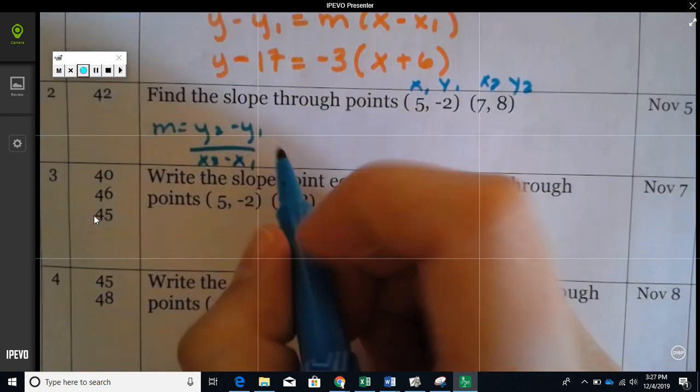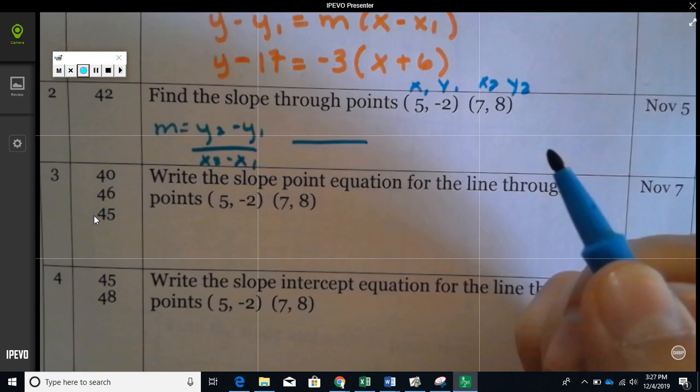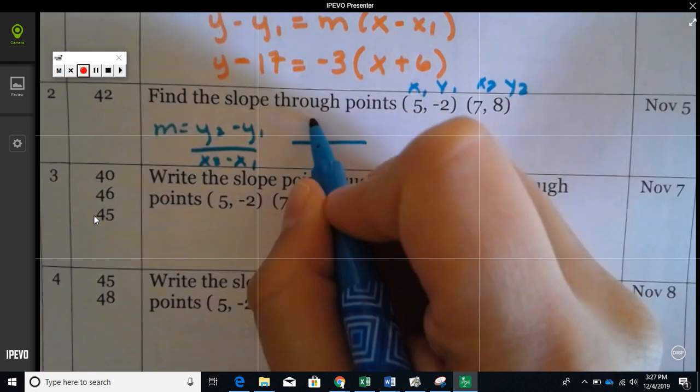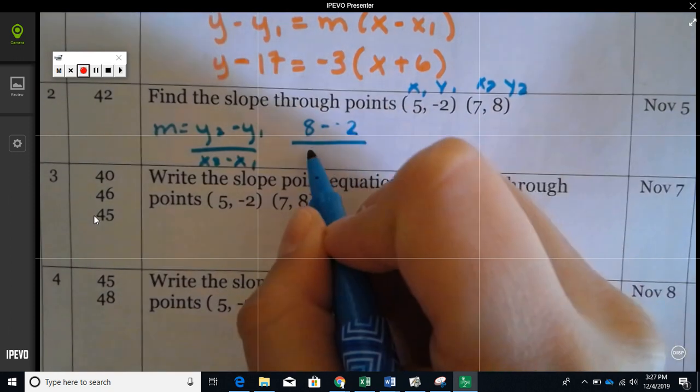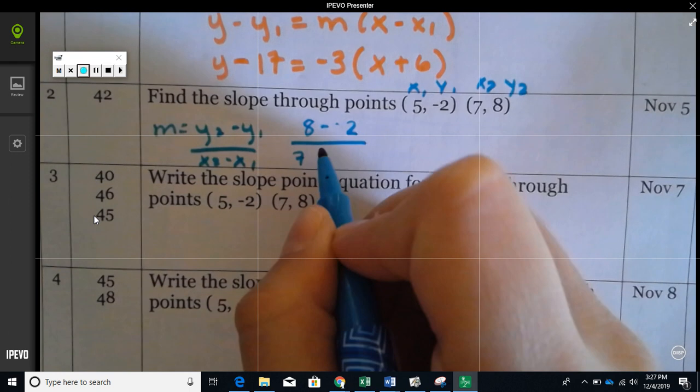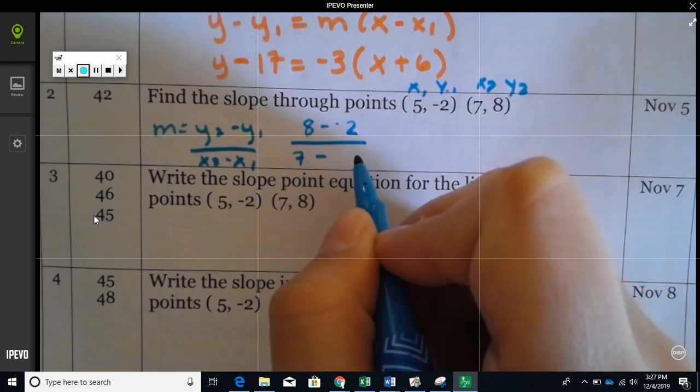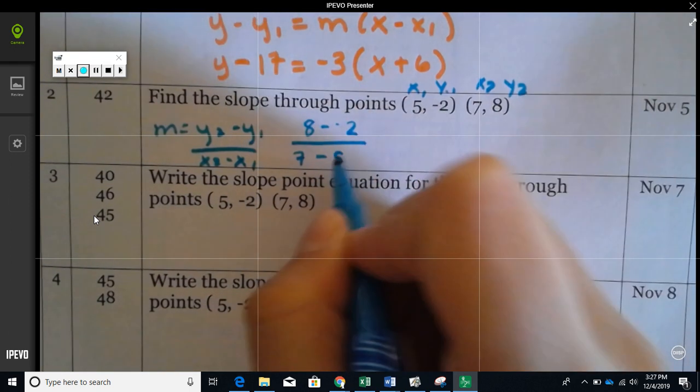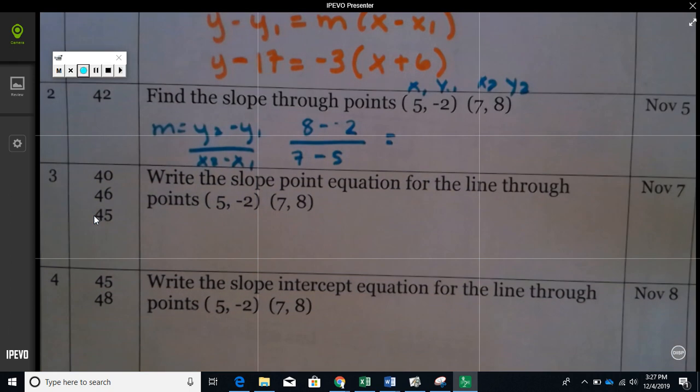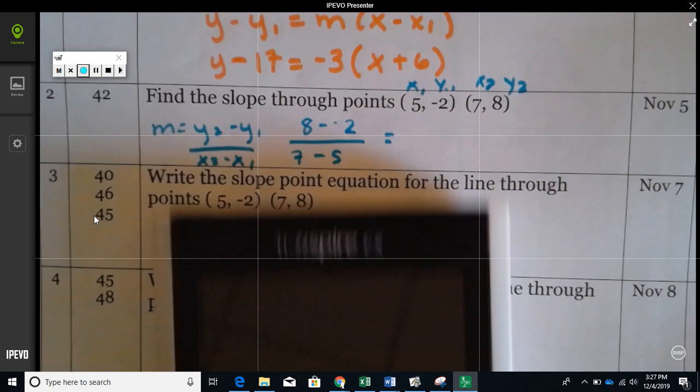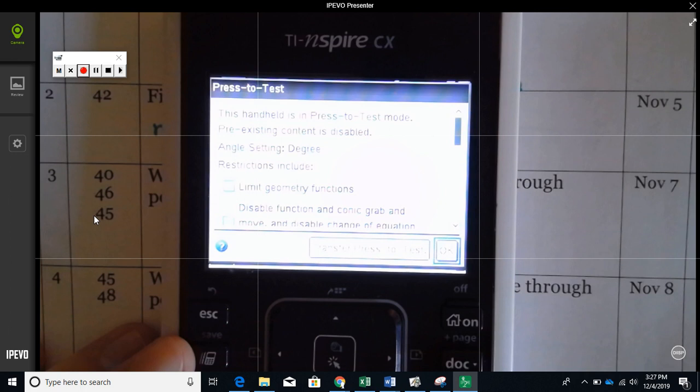Press pause, try it by yourself, and then press play to see if you got it correct. So y2 is right here, 8 minus y1, which is negative 2, over x2, which is 7, minus x1, which is 5. And we're going to put that in the calculator. Put it in the calculator and don't press enter. Come back and I'll tell you if you're doing it right or wrong.